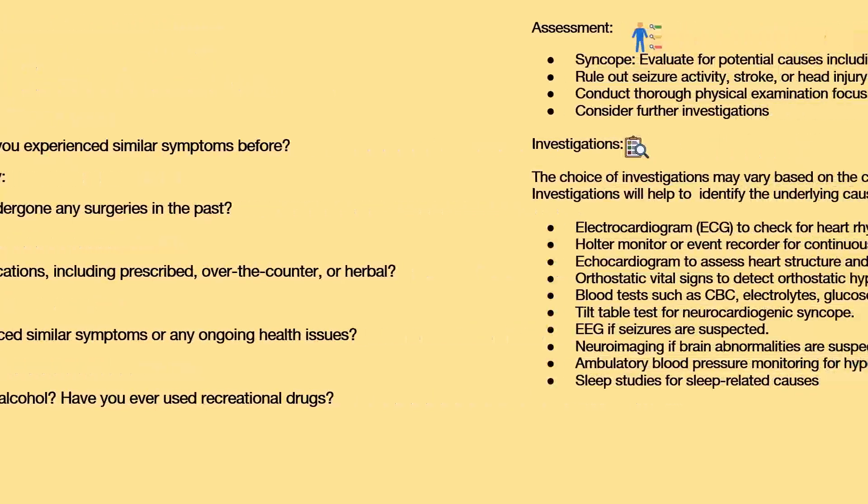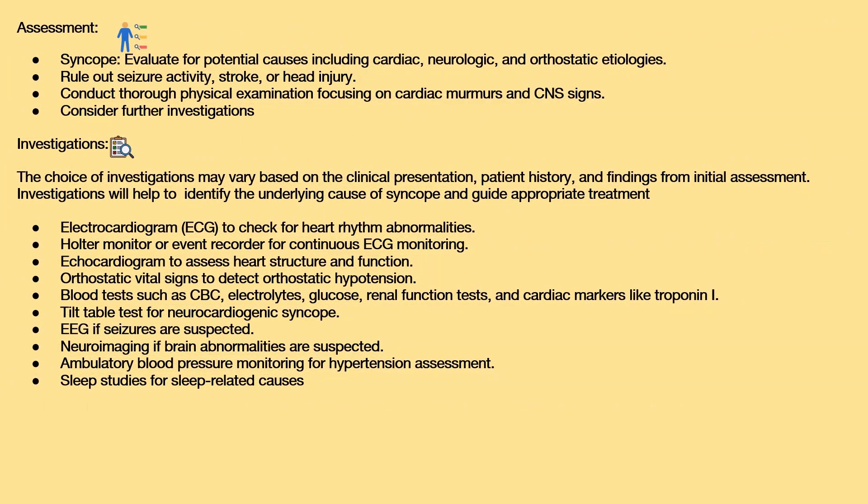For syncope, evaluate for potential causes including cardiac, neurological, and orthostatic etiologies, and rule out seizure activity, stroke, or head injury. Conduct a thorough physical examination focusing on cardiac murmurs and CNS signs. Investigations include ECG, Holter monitor, echocardiogram, orthostatic vital signs, blood tests such as CBC, electrolytes, glucose, renal function, cardiac markers like troponin, tilt-table test, EEG if seizures are suspected, neuroimaging if brain abnormalities are suspected, ambulatory blood pressure monitoring, and sleep studies for sleep-related causes.